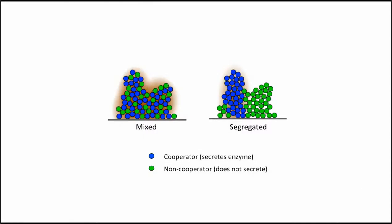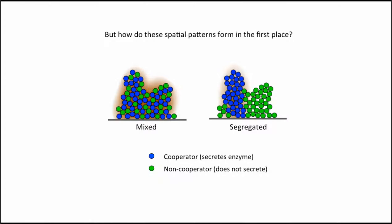But what if instead the two cell types are mixed together? In that case, enzymes are equally distributed among all cells. Since the green ones are not producing this enzyme, they tend to grow faster — they don't pay the cost but get the benefit from the broken-down nutrients. The prediction of which strain will dominate differs depending on what the environment looks like and how cells are distributed in space. Spatial patterns should affect whether bacteria cooperate and whether cooperation evolves in the long term.